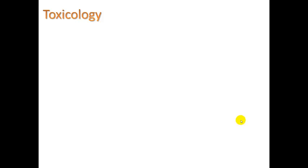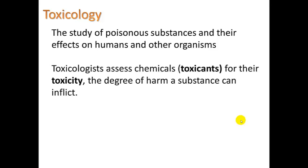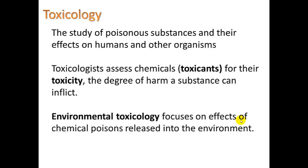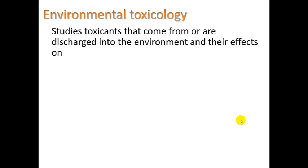In toxicology, we look at the toxicity of these chemicals. It is the study of poisonous substances and their effect on humans and other organisms. Toxicologists assess chemicals — also called toxicants — for their toxicity, meaning the degree of harm a substance can inflict. Environmental toxicology focuses on effects of chemical poisons released into the environment, studying toxicants discharged into the environment and their effects on humans, animals, and ecosystems.